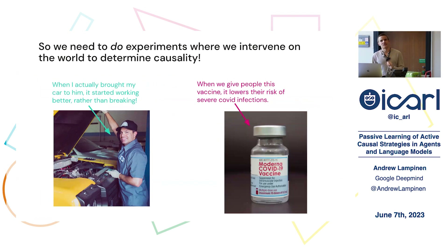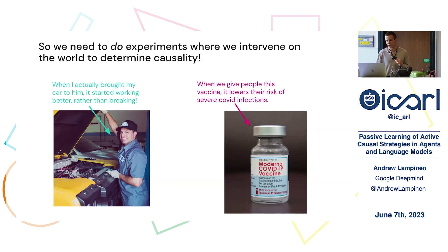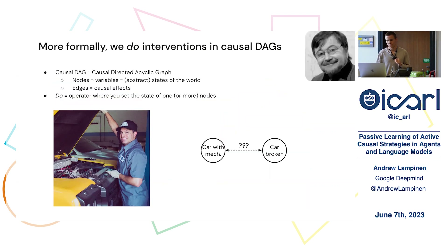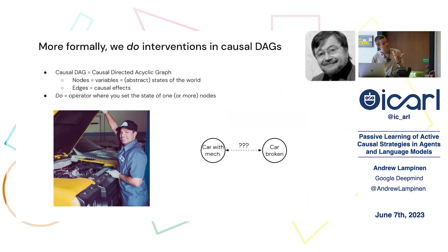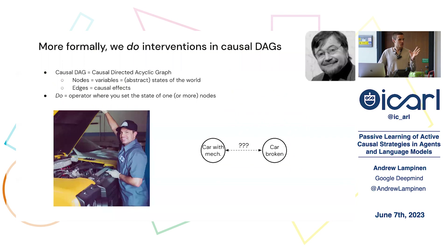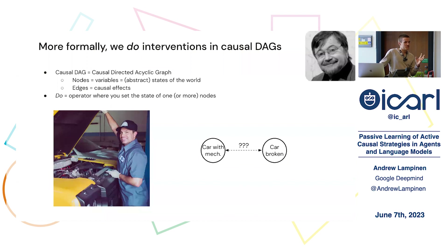For example, you might bring your car to the mechanic and see that the mechanic didn't break the car — they made it work better — or you might give people some medicine and see how it affects their prognosis. This idea of doing interventions has been formalized by Judea Pearl in a framework of causal reasoning based on causal directed acyclic graphs.